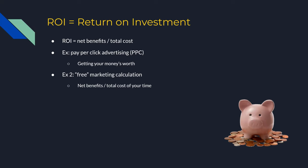For example, if you do a pay-per-click advertising campaign, you can see how many clicks you're getting and figure out whether you're getting your money's worth. You divide the amount of benefit you're getting from those pay-per-click ads by the total cost — how many people are actually clicking, going to your website, and buying things compared to what you paid.